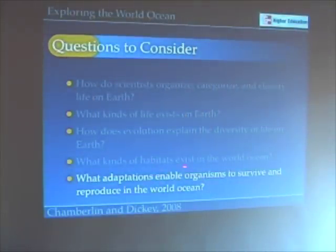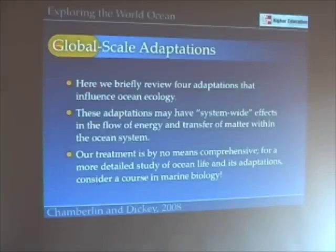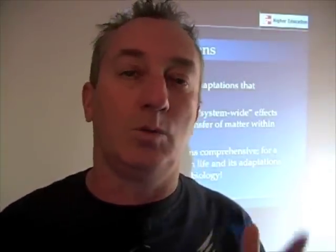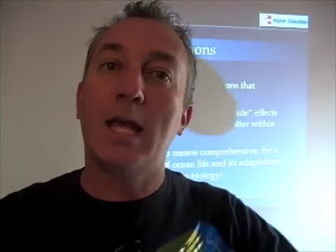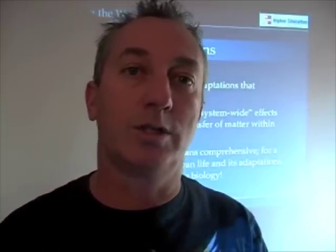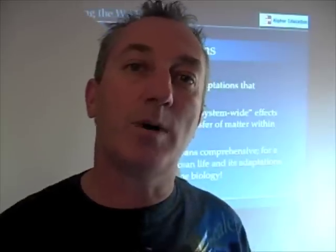So let's look at what adaptations enable organisms to survive and reproduce in the world ocean. We're going to look at four different adaptations that we find really throughout the world ocean. These adaptations are focused on ones that have system-wide effects — we're looking at adaptations that involve the flow of energy and matter in the world ocean, how the ocean works as a system.